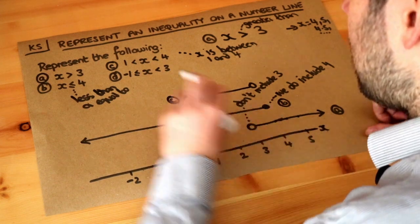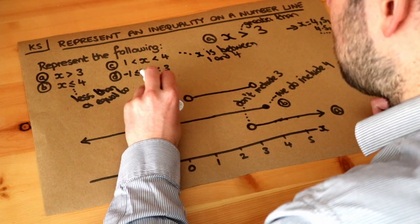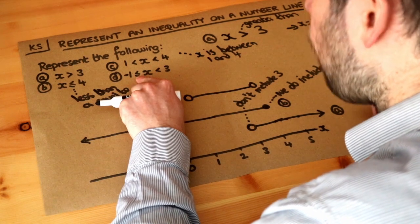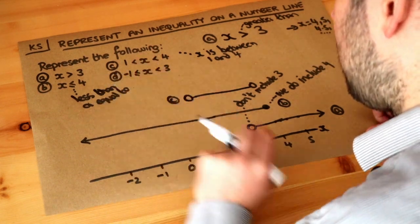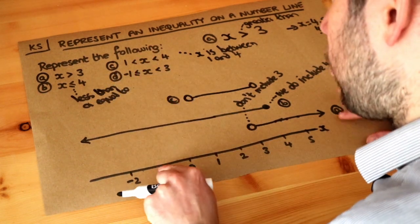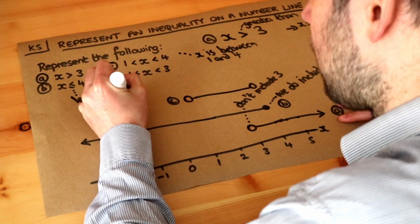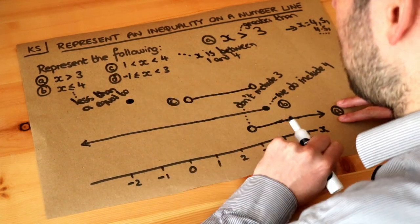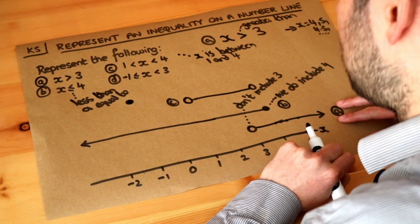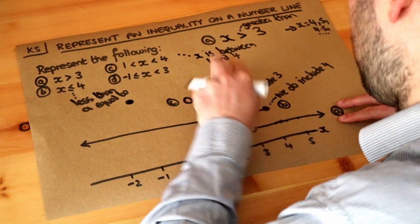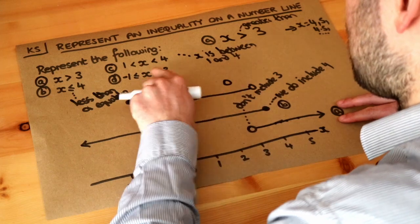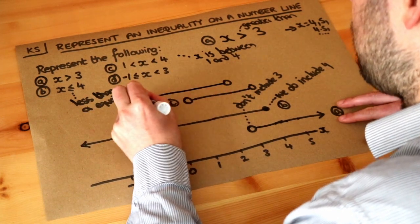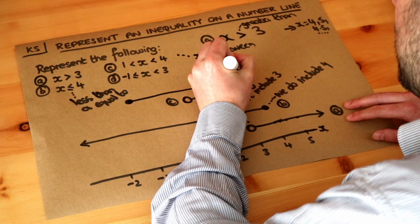For part D, x is between minus 1 and 3. Since x is greater than or equal to minus 1, x could be minus 1, so we put a filled circle there. Since x is less than 3 but can't equal 3, we put an open circle on 3. Then x can be any value between the two, so we draw the line between them.